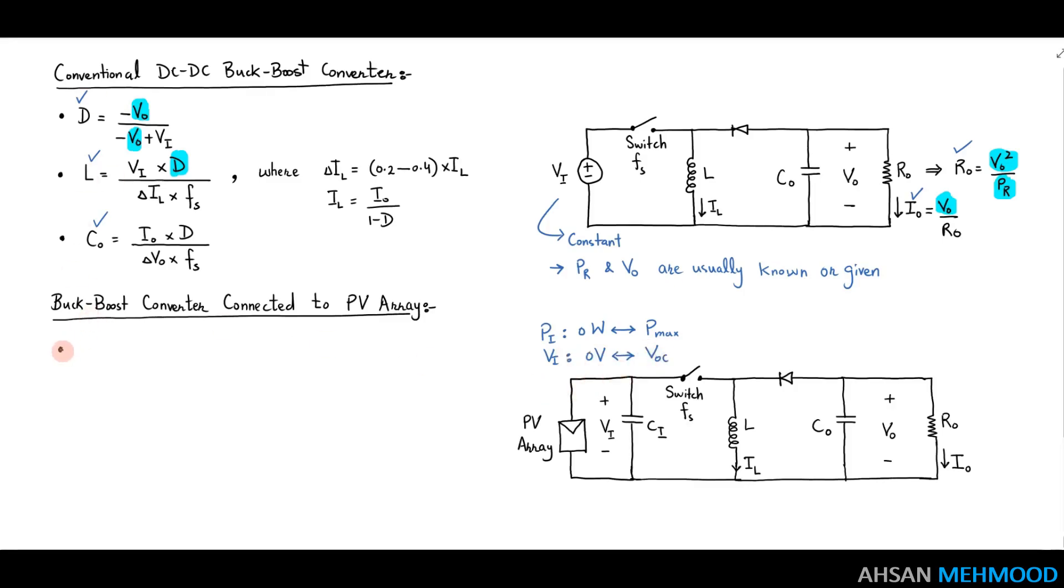the value of buck boost converter's input voltage is not fixed or constant in a PV system. As a result, output voltage or V node is also not constant and the value of duty ratio fluctuates.